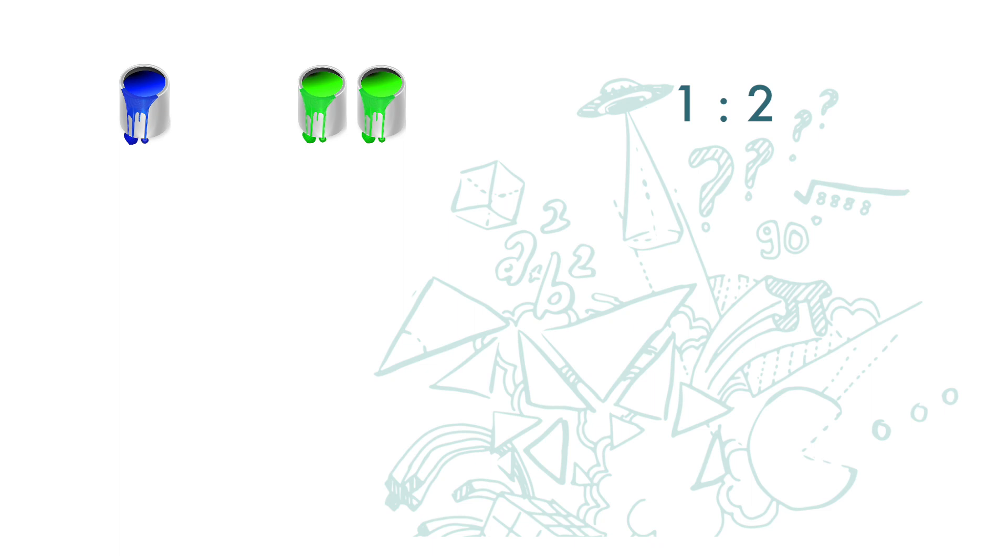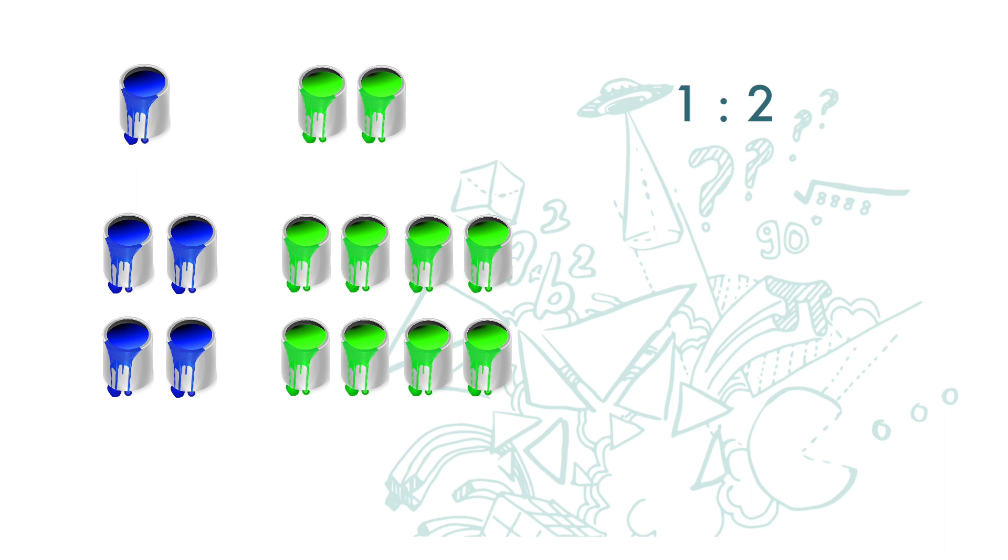However, to paint the living room, we need 12 tins of paint. As a result, we are going to need four tins of blue paint with eight tins of green paint to get exactly the same color.